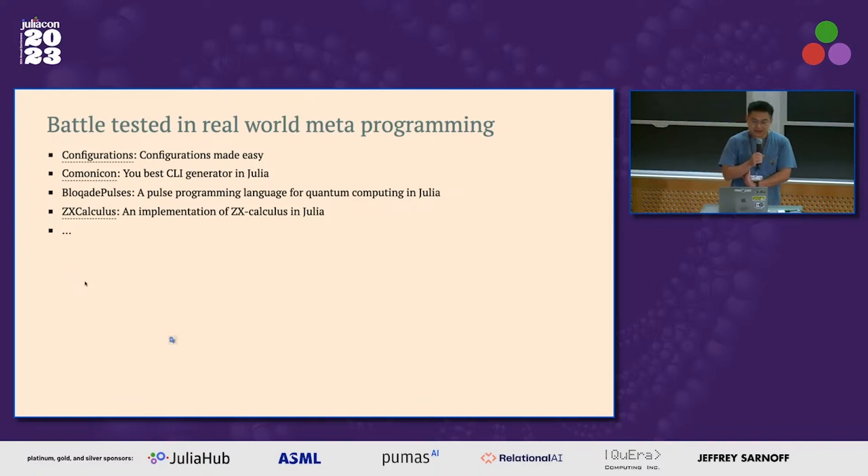And the other reason why we want to use this is comparing to other tools is this is actually a very battle-tested package in metaprogramming. We have been using this extensively across many packages that need complicated metaprogramming, like configurations that we generate the configuration parsing code for you. Comonicone, which is a CLI generator in Julia that generates a dependency-free CLI parser and some other quantum computing stuff.